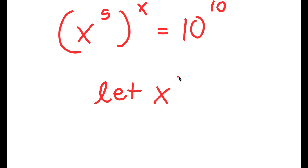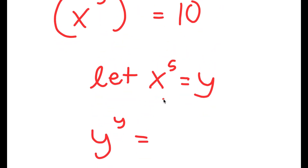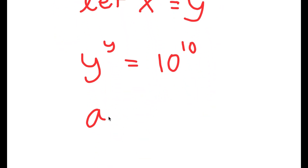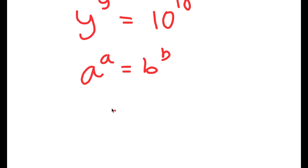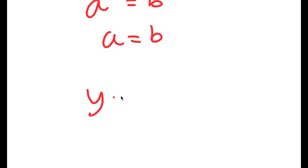Now, I'm going to let x to the power of 5 equal to the variable y. So I get y to the power of y is equal to 10 to the power of 10. If I have something in the form a to the power of a is equal to b to the power of b, this means that a is equal to b. So in this case, y is equal to 10.